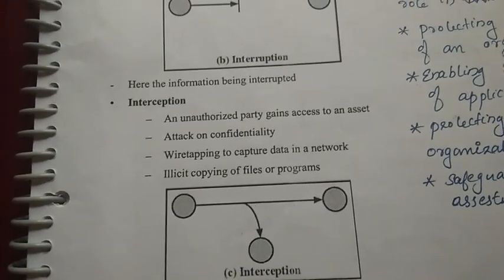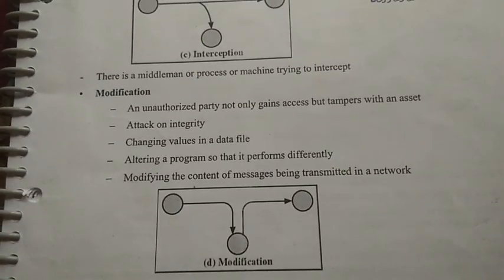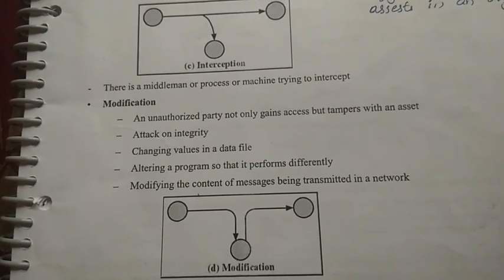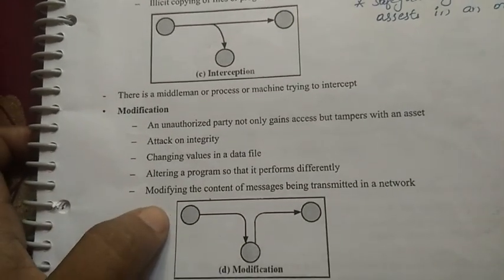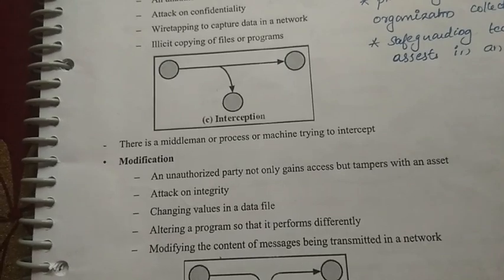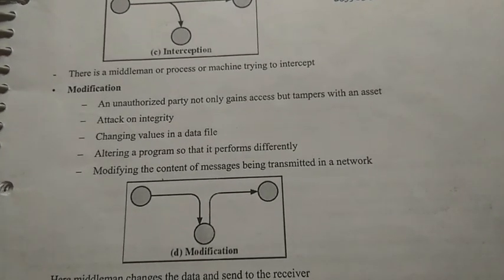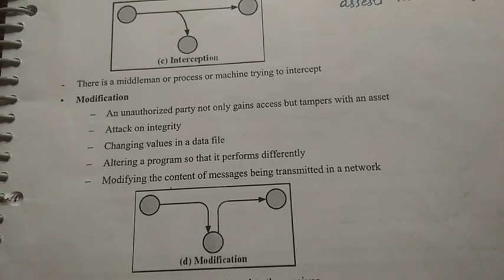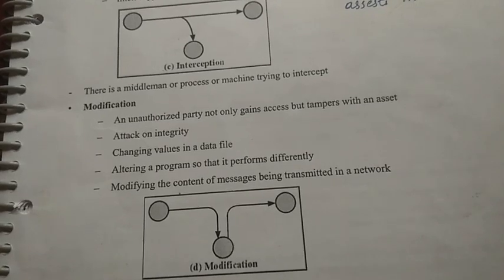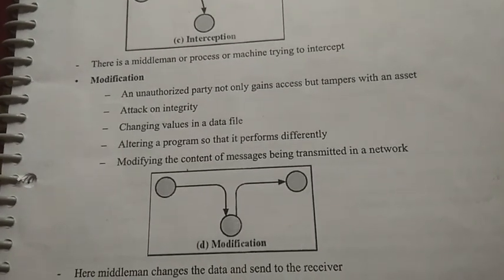Modification is when data is modified. The source and destination have a middle man — the middle man reads the source data, modifies it, and sends it to the receiver. In the interception case, the data is just read without modification. Modification means an unauthorized party not only gains access but tampers with an asset — that is an attack on Integrity.